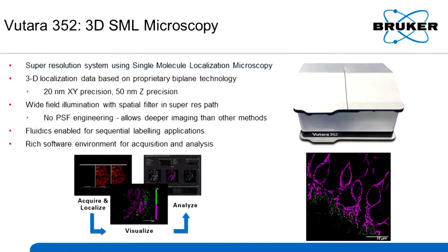The system gives us 20 nanometer X-Y precision, and in every experiment you also get 50 nanometer Z precision. It uses wide field illumination with a spatial filter in the super-res path, but there's no point spread function engineering involved, which means we can image deeper than other single molecule systems. We have fluidics enabled — the fluidic system is integrated into the hardware — so we can do sequential labeling applications. And we have a rich software environment for acquisition and data analysis built into the system.